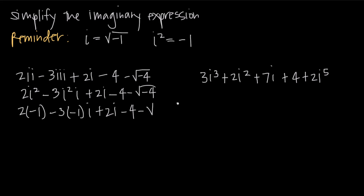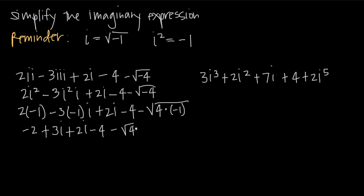Continuing the simplification: 2 times negative 1 gives negative 2. Negative 3 times negative 1 gives positive 3, and we keep that i. Then plus 2i minus 4. For the square root term, we break it into minus the square root of 4 times the square root of negative 1. Combining like terms, negative 2 and negative 4 give negative 6. The 3i and 2i give positive 5i. The square root of 4 is 2, and the square root of negative 1 is i, so we get minus 2i. Combining again: negative 6, plus 5i, minus 2i gives positive 3i.